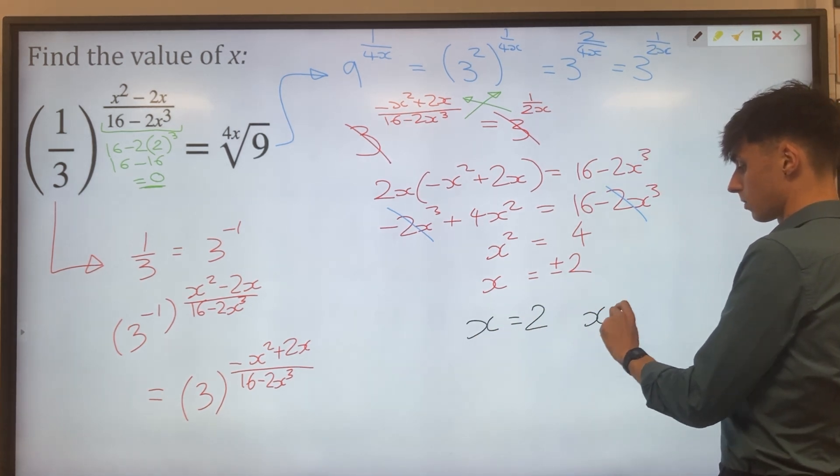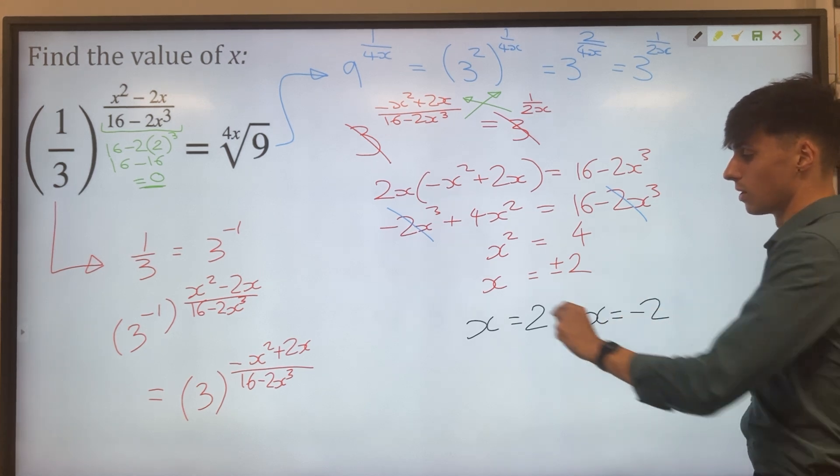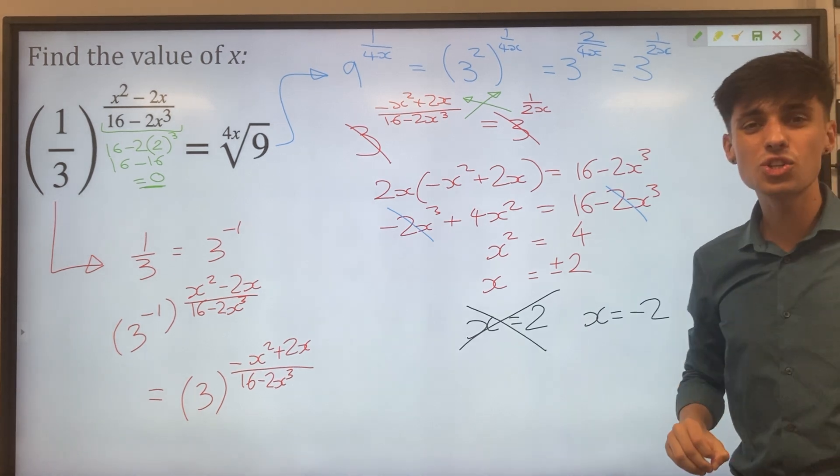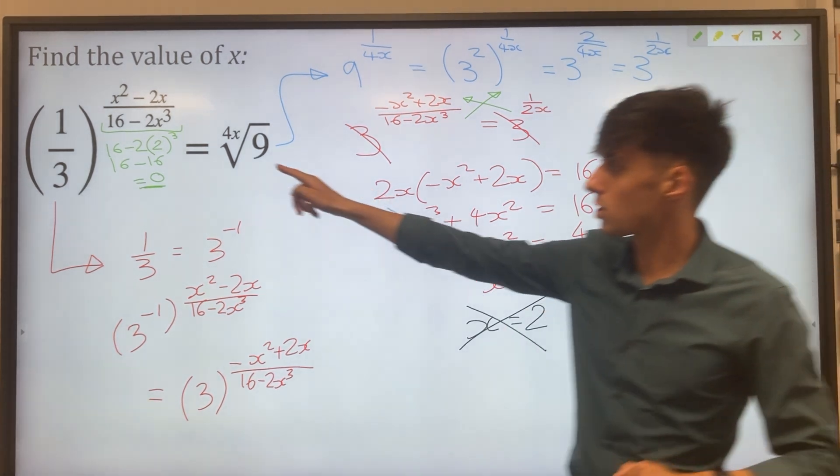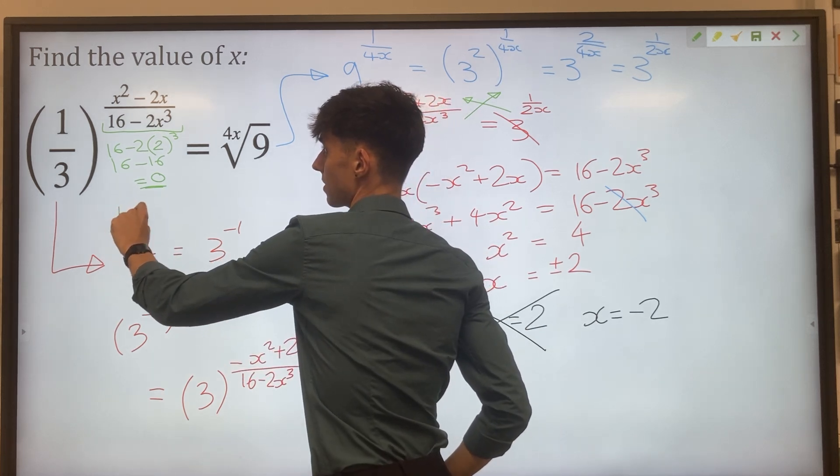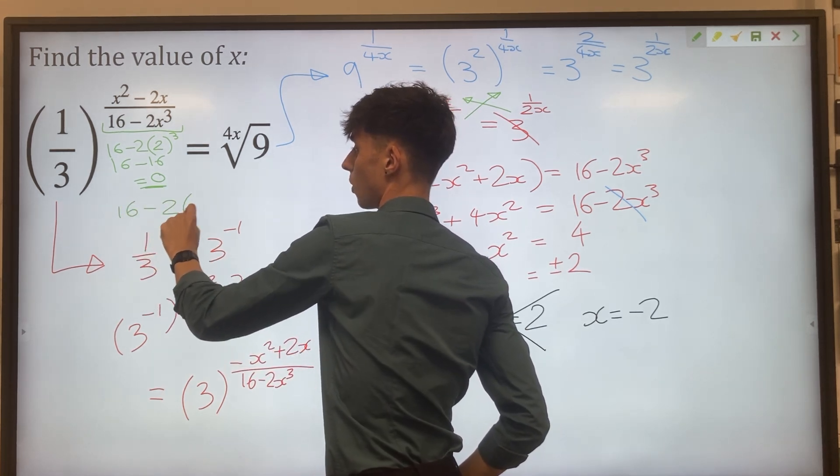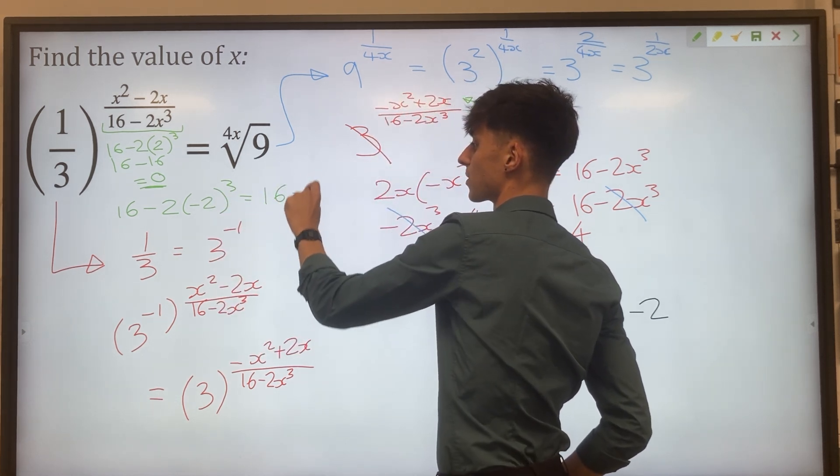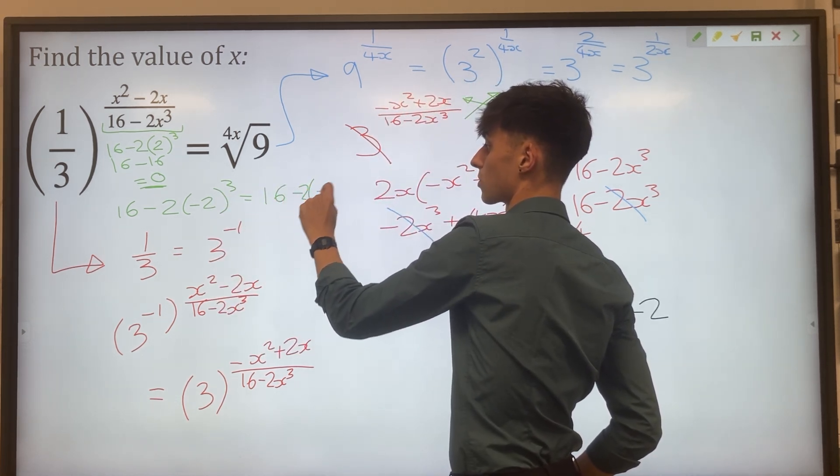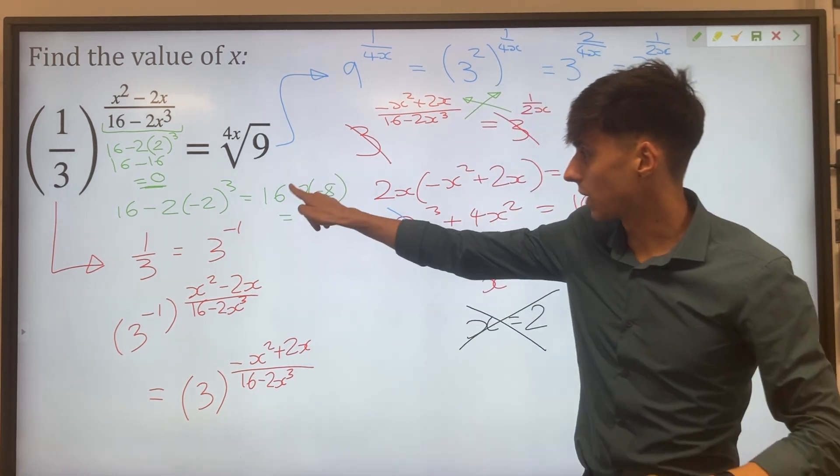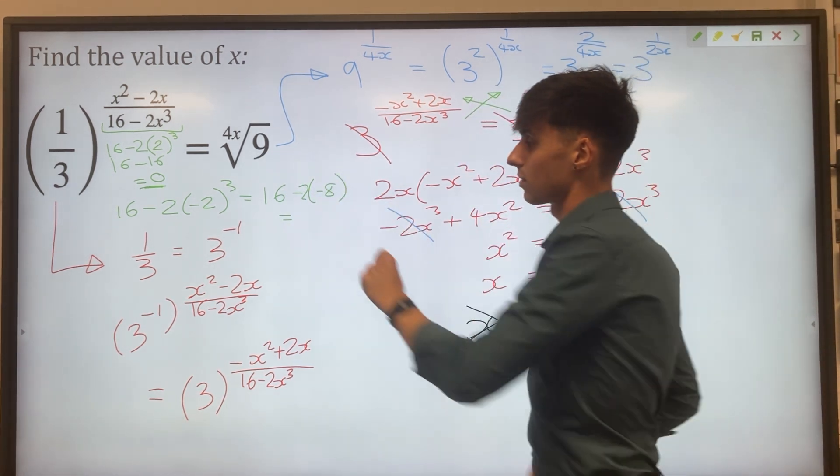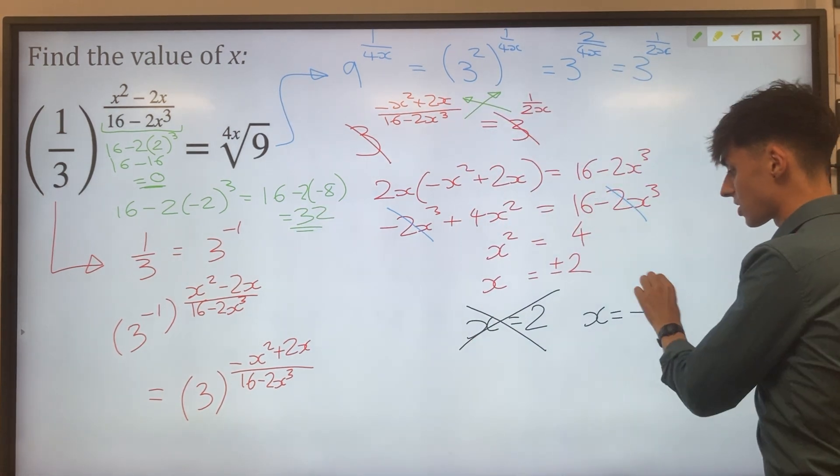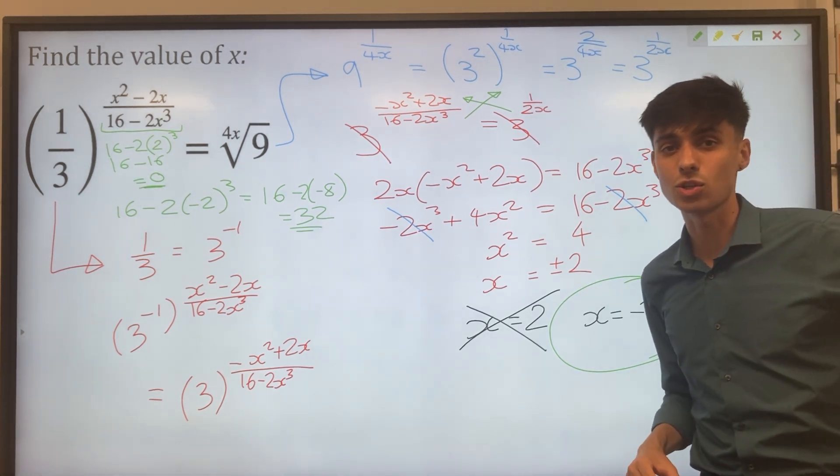So x could have been 2, x could be minus 2. This one is definitely not working. Let's just check the other option. So if x was minus 2, we would have 16 minus 2 lots of minus 2 cubed. Well, this would be 16 minus 2 lots of minus 8. That gives you a plus 16. So we get 32 on our denominator. Yeah, no problems there. So actually, x is minus 2 is our only valid solution.